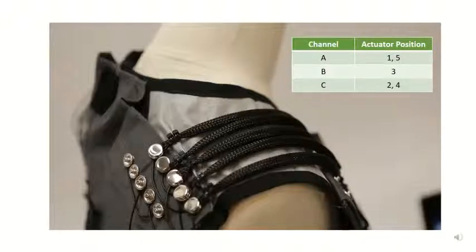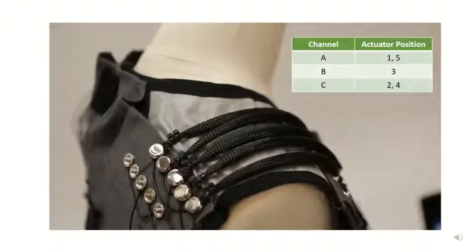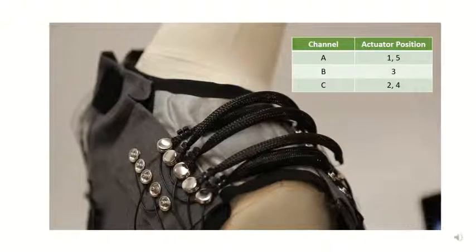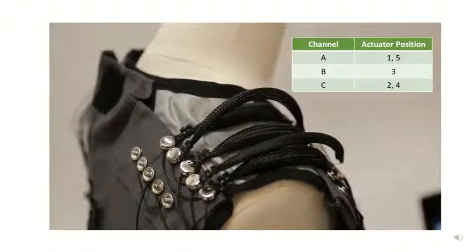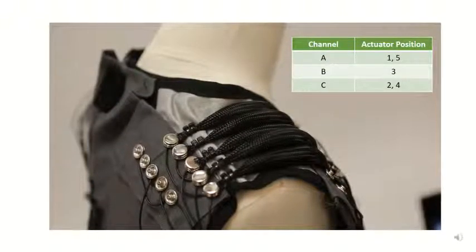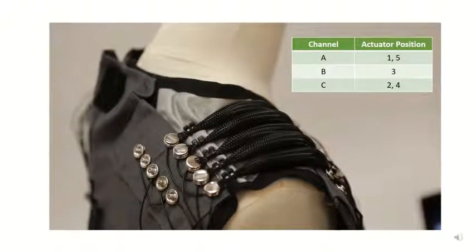This video shows an example of the shoulder region. For low compression, only channel A with actuators 1-5 are activated. For medium compression, channels A and B with actuators 1-5 are activated. For high compression, all three channels and all actuators are activated.